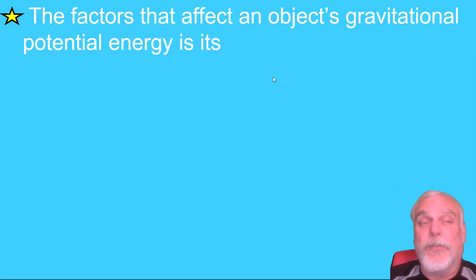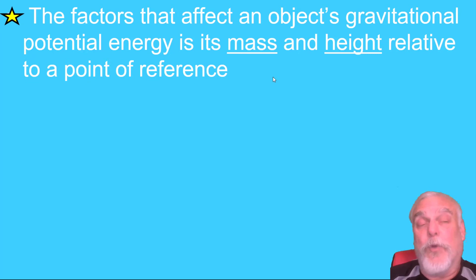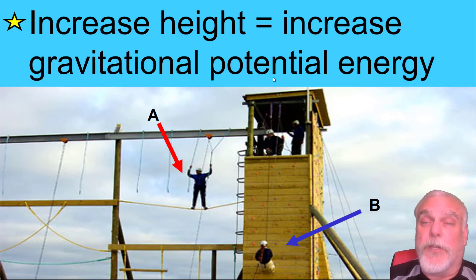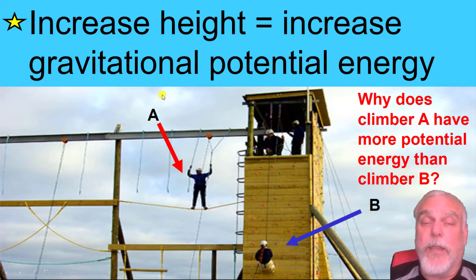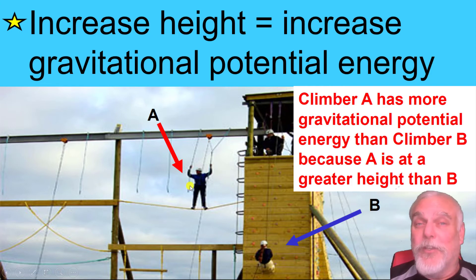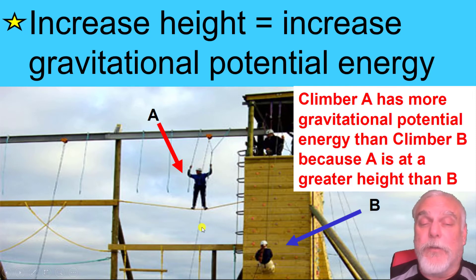The factors that affect an object's gravitational potential energy are its mass and the height relative to a point of reference. If you increase height, you increase the gravitational potential energy of the object. Why does climber A have more potential energy than climber B? Because A is at a greater height. If the ropes magically vanished, climber A would fall farther than climber B, and also be falling faster — since as an object falls, it increases in speed.